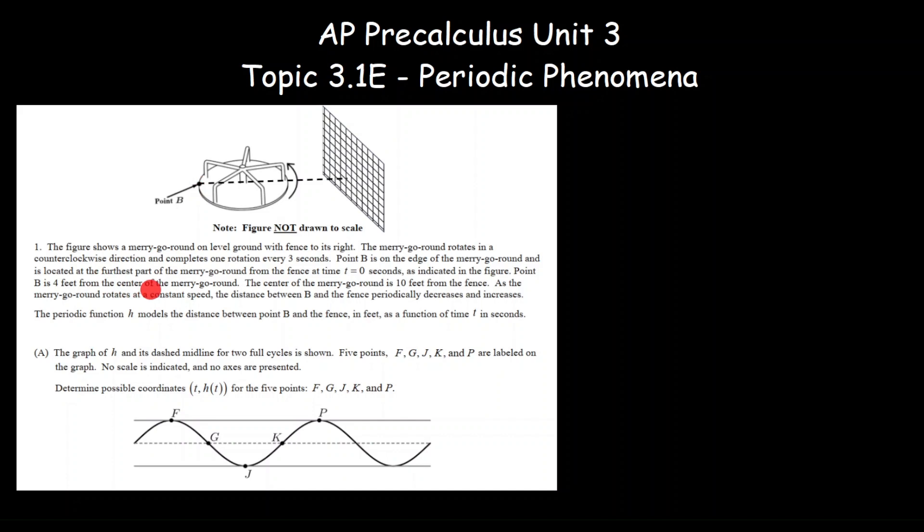B is on the edge of the merry-go-round, located at the furthest part of the merry-go-round from the fence at time t equals zero. Point B is four feet from the center of the merry-go-round. The center of the merry-go-round is ten feet from the fence.